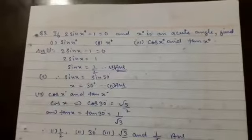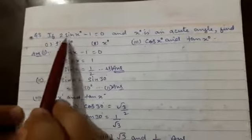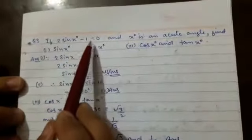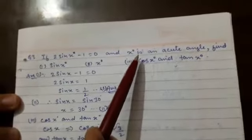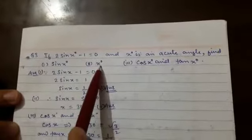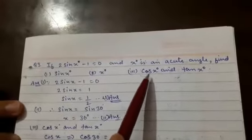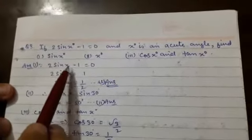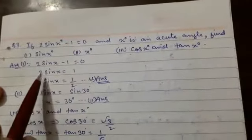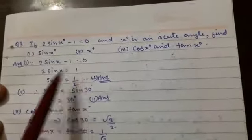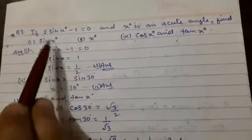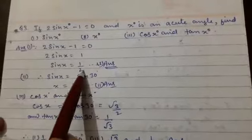Now we will see question number 3. If 2 sin x° − 1 = 0 and x° is an acute angle, find: first part — sin x°; second part — x°; third part — cos x° and tan x°. Since 2 sin x − 1 = 0, we get 2 sin x = 1, so sin x = 1/2. This is our first answer.